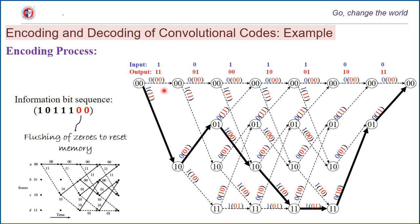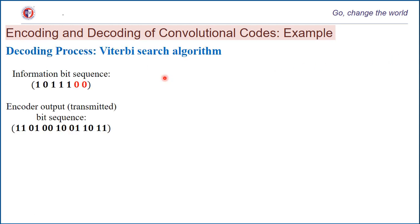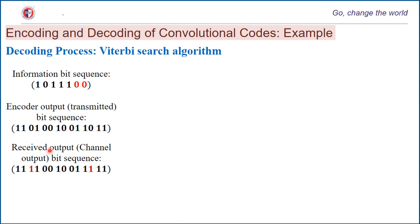If this codeword is sent through the channel, let us assume the channel corrupts it in 2 bit positions. As displayed, this is the original encoder output. The channel corrupts two bit positions — say this 0 is flipped to 1 and this 0 is flipped to 1 — and this corrupted sequence is what is fed to the receiver. The job of the decoding process is to use the Viterbi algorithm to recover the original information bit sequence.